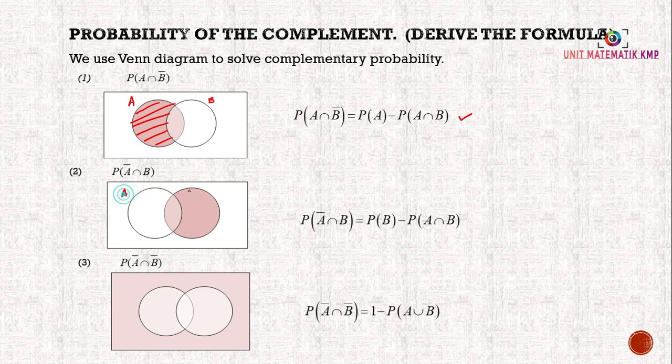For the second part, we have two events A and B. Probability of A' ∩ B, which is everything except A intersect with B. We will have this part. To find the probability of the shaded area, we take P(B) - P(A ∩ B). This is the formula.